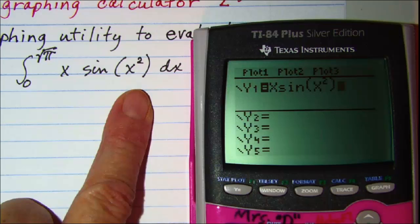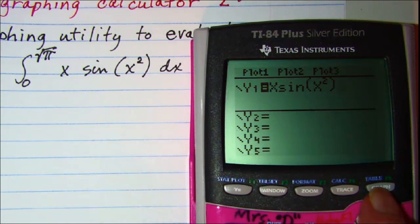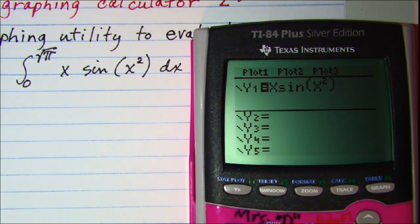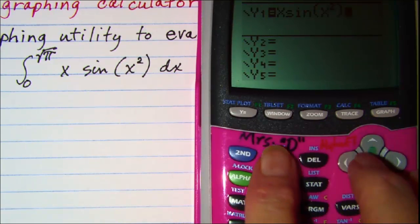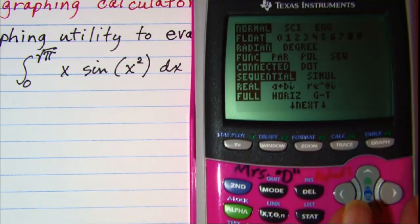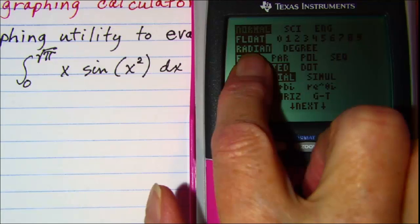Now before I hit graph to see what this function looks like, I need to make sure that I'm in radian mode. So you'll press the mode button and make sure you're in radians.